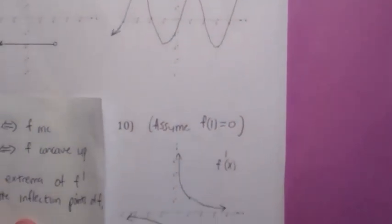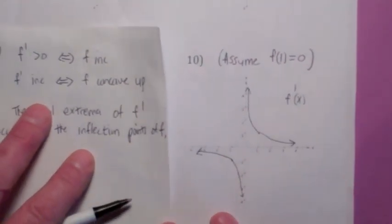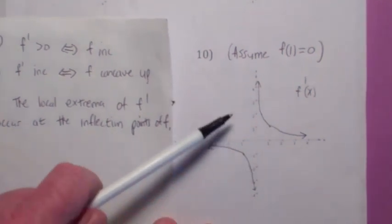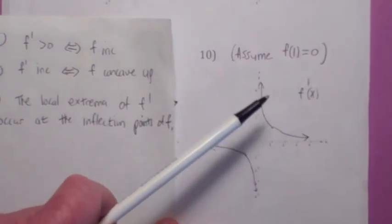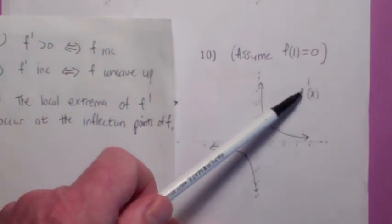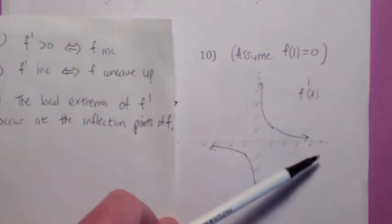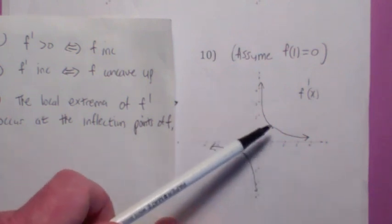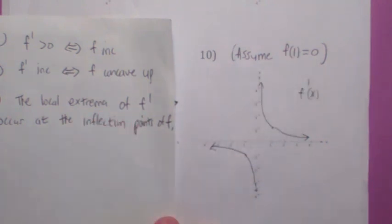This is kind of an interesting one. Look at this last one. Now, I'm going to assume f of 1 is 0, not f of 0 is 0, because it's obviously not defined at 0. This is a graph of f prime, and I want you to assume that f of 1 equals 0, and what would the graph of f be?